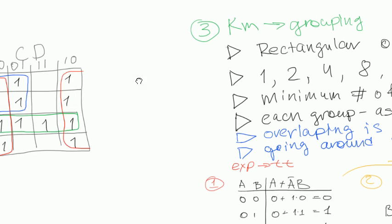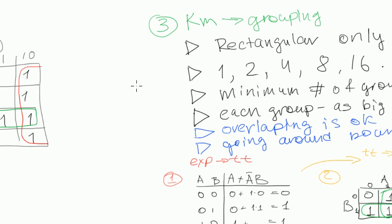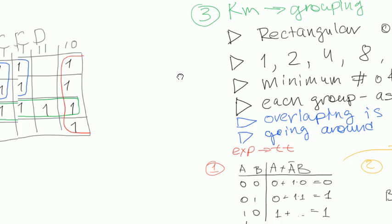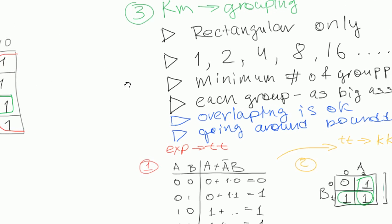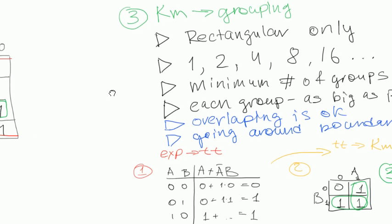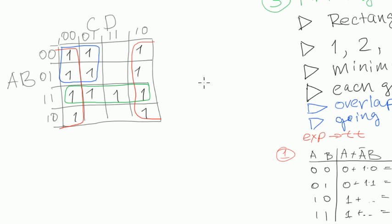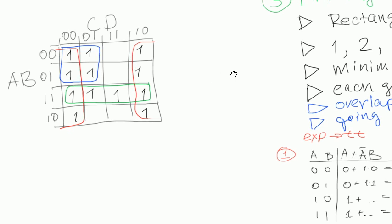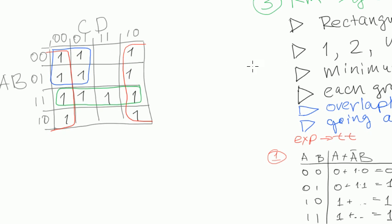Then we have, they are all rectangular. Even the red one is pretty rectangular. It just goes round like Pac-Man. Minimum number of groups. Can we make any less number of groups? No, I don't think so.